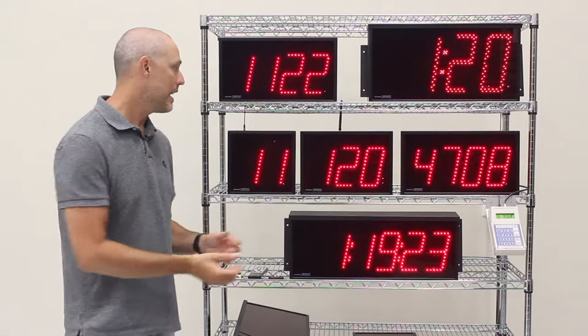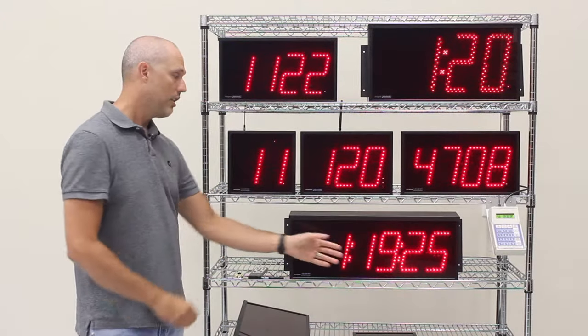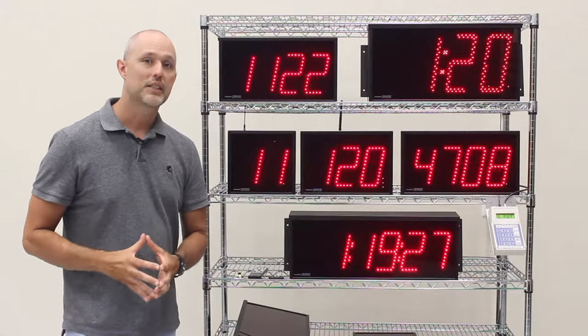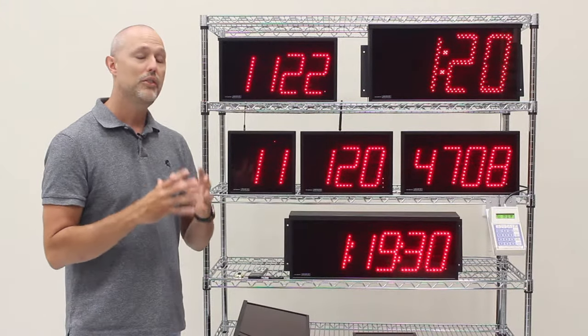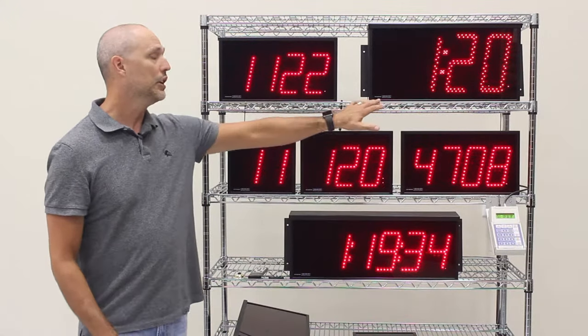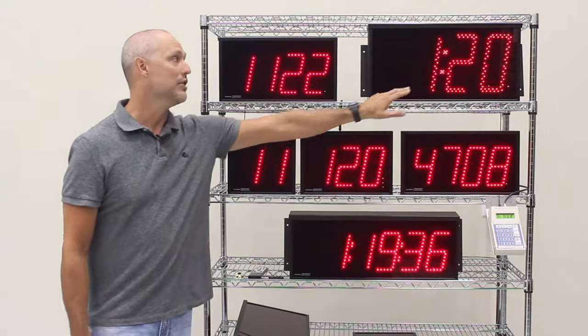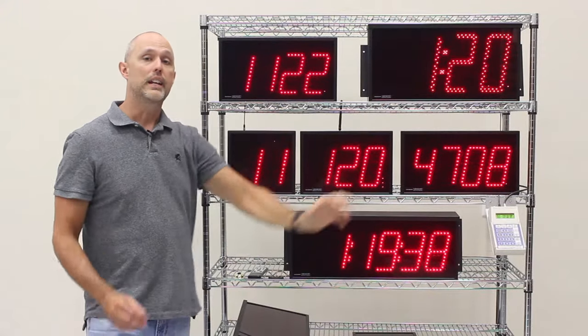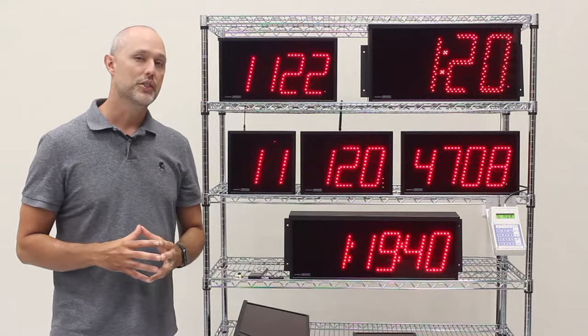The next thing to decide is the character size. Our five and a half inch displays are about the size of an exit sign and work for most applications, but if you have an application that needs long distance visibility you're going to want to go with our eight inch display. It has dual row LEDs and can be purchased in most of our series.